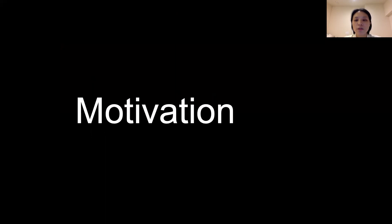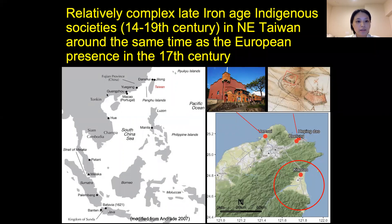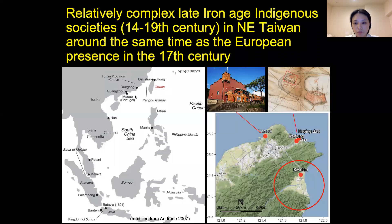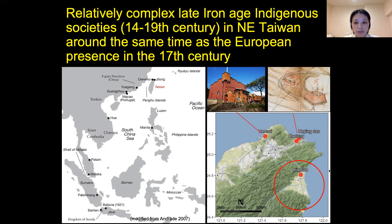Now let's go back to my research. I'll start with a brief overview of the historical background of my study area and research motivation. From the 15th to the 19th century, Europeans expanded trade between Europe and Asia. The map on the left shows European trading stations in Southeast Asia and East Asia. Northern Taiwan was one important trading center established by the Spanish and later taken over by the Dutch in the 17th century. Here you can see the places where Europeans built their forts in northern Taiwan. What's very interesting is we observe relatively complex indigenous societies in northeastern Taiwan — the triangular plain — around the same time as the European presence.